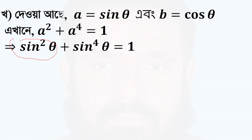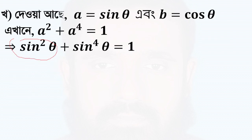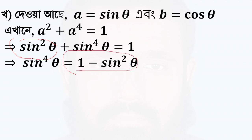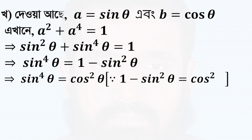That means a by b. A is cos, sin by cos is tan. A is tan. Sin to the power of 4 is equal to 1 minus sin squared. 1 minus sin squared is cos squared. So sin to the power of 4 theta is equal to cos squared.